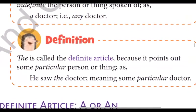And 'the' is called the definite article. 'The' ko definite article kaha gaya hai, because it points out some particular person or thing — kyunki ye kisi khaas aur particular person ya thing ke baare mein baat karta hai. For example, 'He saw the doctor' — meaning some particular doctor, koi khaas doctor, har koi doctor nahin, koi khaas doctor jise wo jaanta hai, ya jisse pehle munaaqaat ho chuki hai.